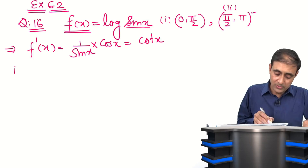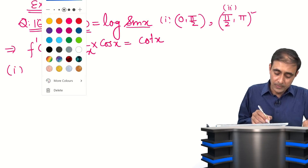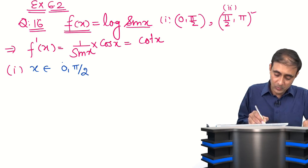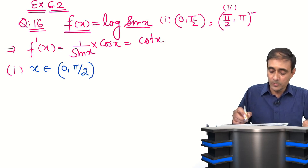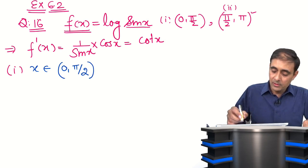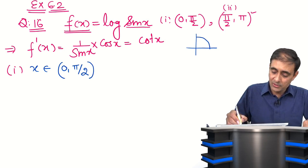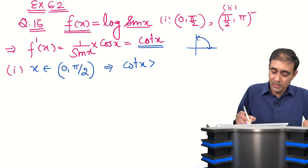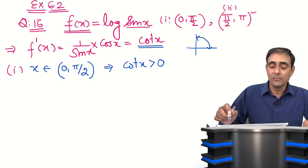Now for the first part, for x belonging to the open interval (0, π/2): this is the first quadrant, and in the first quadrant all trigonometric ratios are positive. So cot x will be positive — cot x is greater than 0 in the first quadrant.